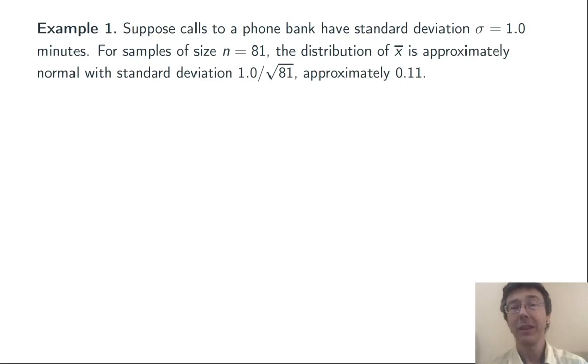That distribution of sample means of the x-bars is going to be approximately normal. Its mean is going to be the same as the population mean for individual calls, and its standard deviation is going to be sigma divided by the square root of n, 1 divided by the square root of 81, about 0.11 in this case.